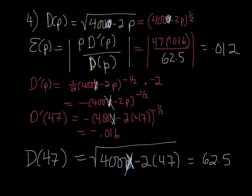So that's going to change things here. Going back to D', it's going to be 400 minus 2 times 47. So, 306 to the power of -0.5. So, we get -0.06. And then if we just do D(47), so that's going to be 400 minus 2 times 47. And we want the square root of that. That's 17.5.